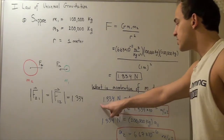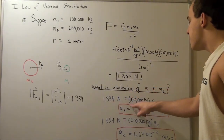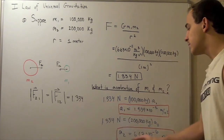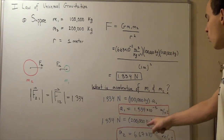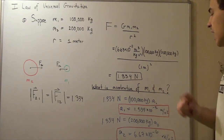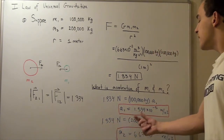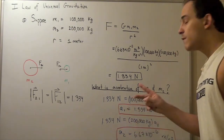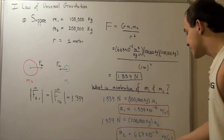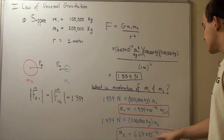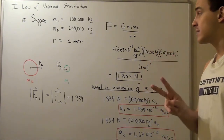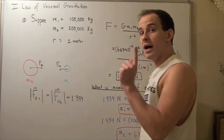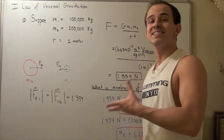Force equals m times a: 1.334 newtons equals the mass of object 1, 100,000 kilograms, times A1. Solving, I find the acceleration to be 1.334 times 10 to the negative 5 meters per second squared. Likewise, 1.334 equals mass 2 times acceleration 2, and solving I find the acceleration for mass 2 — the heavier mass — is less: 6.67 times 10 to the negative 6 meters per second squared. In fact, it's twice as less. So this heavier object experiences the same exact force but accelerates with twice as less acceleration, while the lighter object accelerates with twice as much acceleration as object 2.